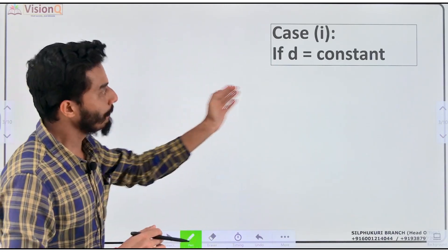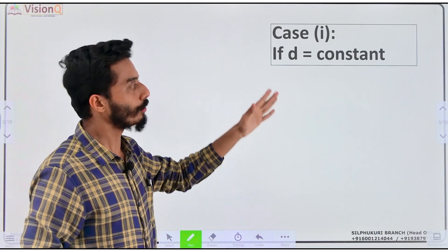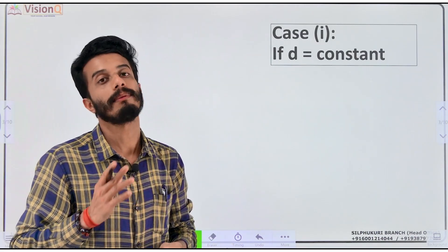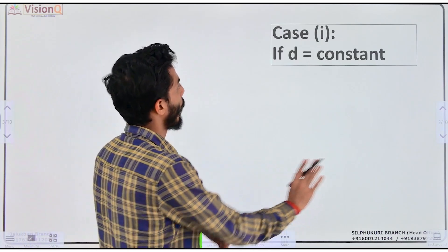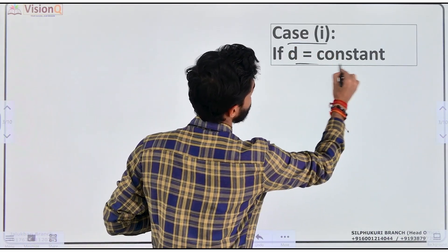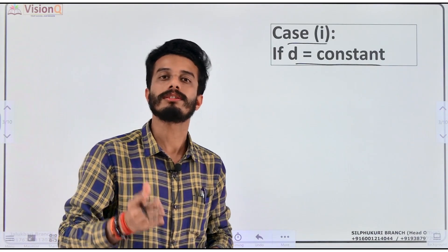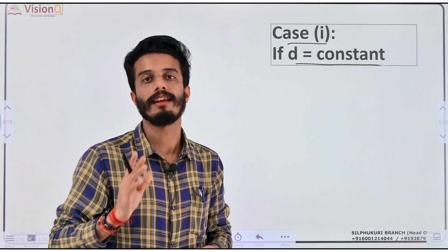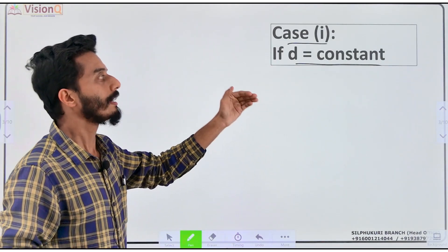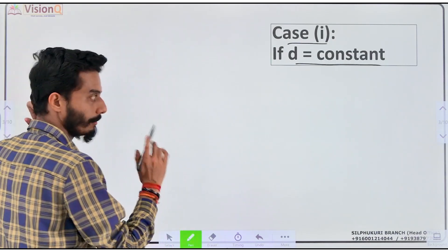I will tell you the first case. This is the case where distance is constant. If distance is constant, then how do we find average speed? Let's take an example.